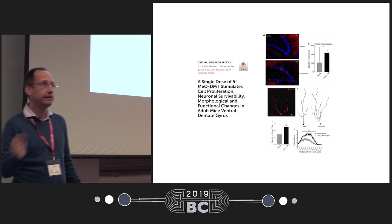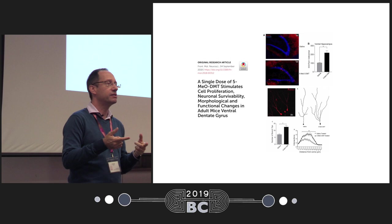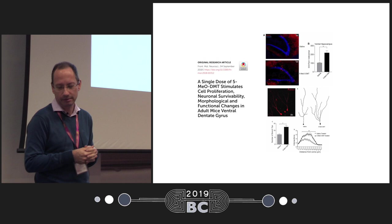This paper is already published. More recently, the group from Natal, where Sidarta and Draulio are located, showed in another paper that 5-MeO-DMT indeed increases neurogenesis and brain plasticity using mice as a model.